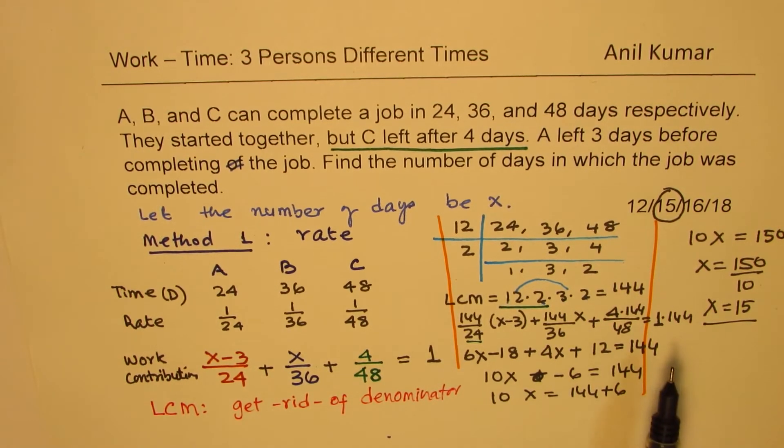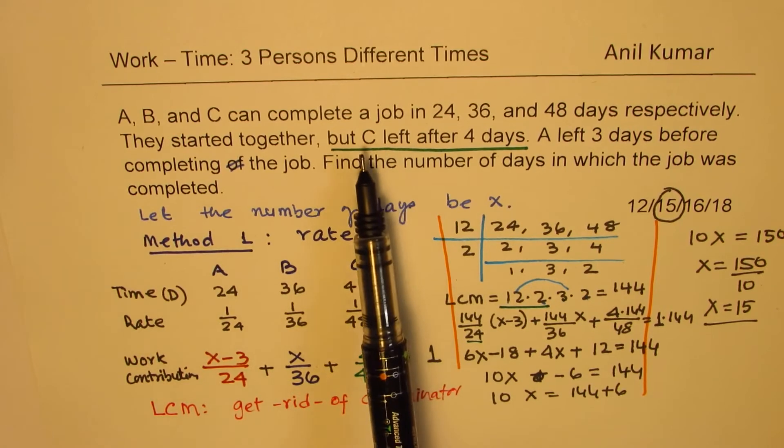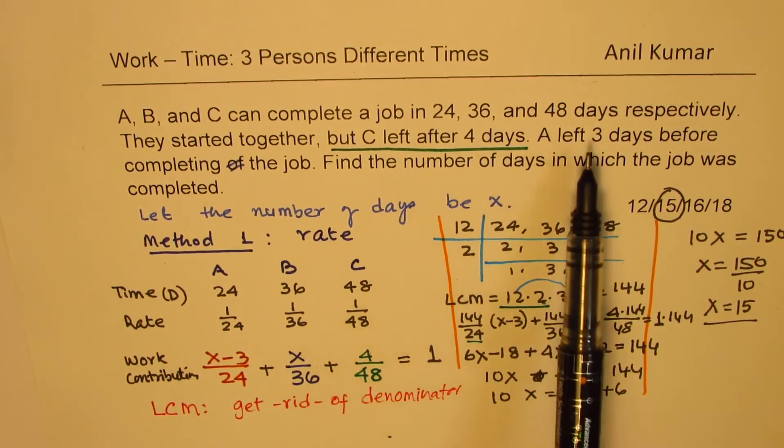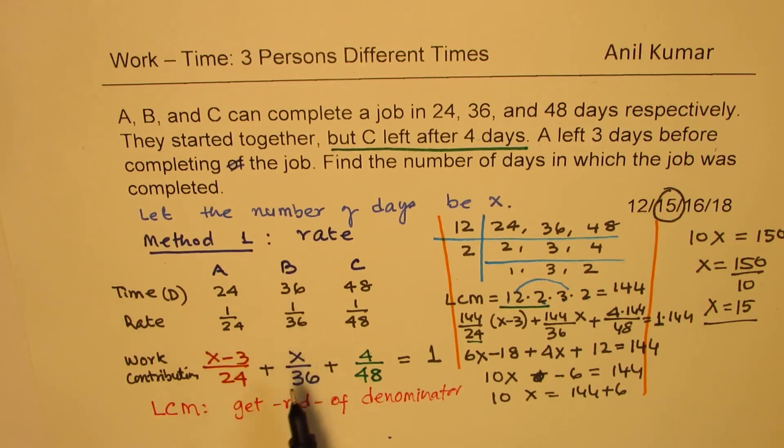Once you know that these are the times for each person, you know the denominators. Then, as soon as you read C left after 4 days, we get 4 over 48. 3 days before completion of the job, A left. So that means A worked for 3 days less, B worked all the while. We get our equation. Finding lowest common multiple, multiplying means 144 we have to multiply by. So this is 6 times, this is 4 times, and this is 3 times. And so we multiply each by 3 times 4 is 12. And then we get 4 times x is 4x, and 6 times we get our number. And then we can solve this equation and find the value of x. So this becomes our method number 1.